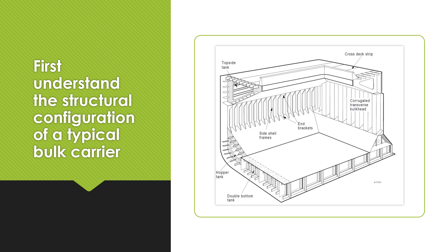I'll show you a few diagrams. The most widely recognized structural arrangement of a bulk carrier is a single deck ship with a double bottom, hopper tanks, single side skin transverse framed side shell, top side tanks, and deck hatchways. You can see here a typical transverse section in way of a cargo hold.